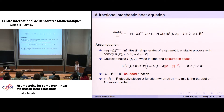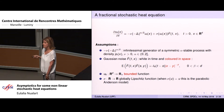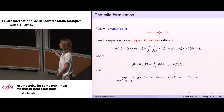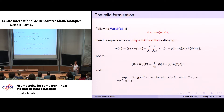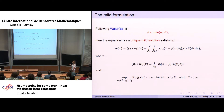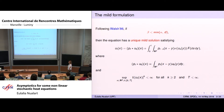In all the talk, the initial condition is going to be a non-negative and bounded function. This is a classical equation, and it is well known that we can give a meaning to the solution via the mild formulation introduced by Walsh. In this particular case of the fractional Laplacian and the Riesz kernel correlation, we need beta less than the minimum of alpha and the space dimension. There is a unique process, adapted and jointly measurable in t and x, that satisfies this integral equation. The first term is the convolution of the initial condition with the density of the alpha-stable process, and the second is a stochastic integral with respect to the noise. This process has moments of all orders for any fixed x.